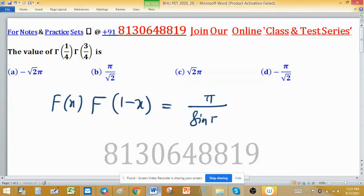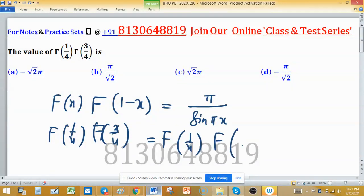Using this formula, you can easily evaluate gamma 1/4 and gamma 3/4. Gamma 3/4 can be written as gamma 1 minus 1/4. So the value equals π upon sine πx, with x = 1/4.